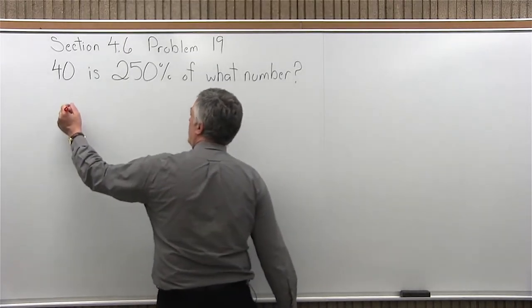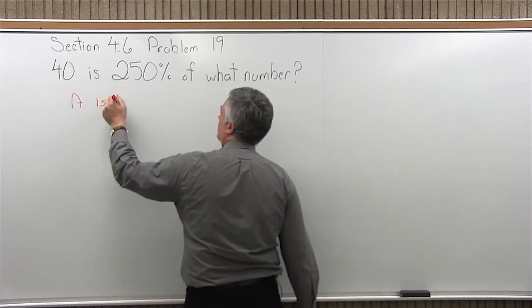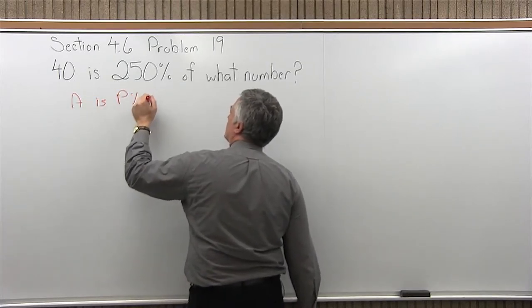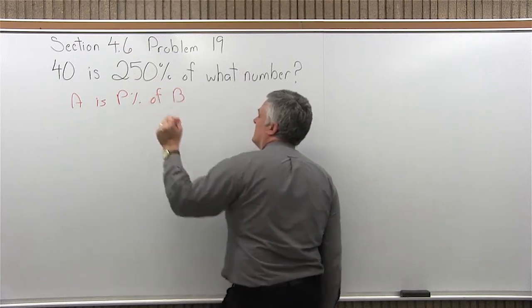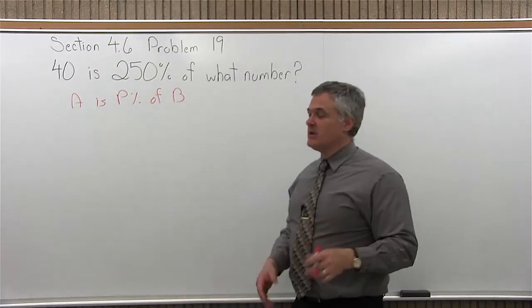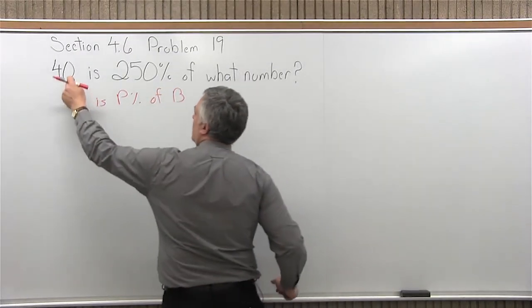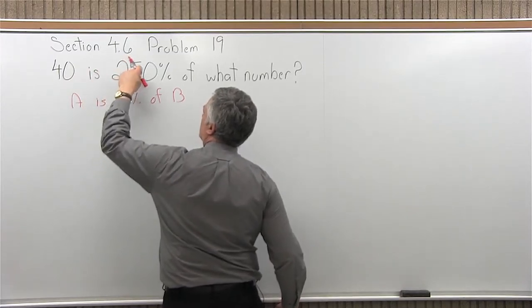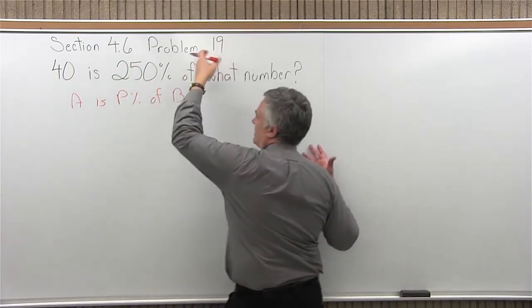So, what we want to do is make sure that the question is in the form, A is P percent of B. And it is. If it isn't we have to rearrange it, but it is in that form. A is P percent of some number, B.